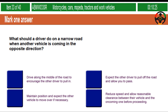What should a driver do on a narrow road when another vehicle is coming in the opposite direction? Drive along the middle of the road to encourage the other driver to pull in. Expect the other driver to pull off the road and allow you to pass. Maintain position and expect the other vehicle to move over if necessary. Reduce speed and allow reasonable clearance between their vehicle and the oncoming one before proceeding.